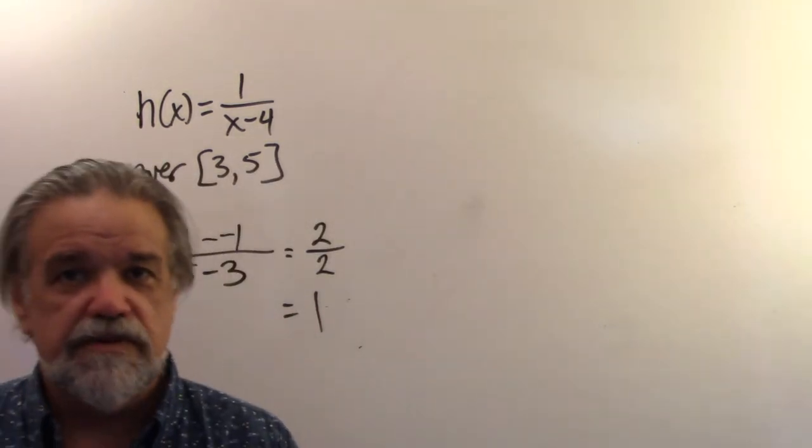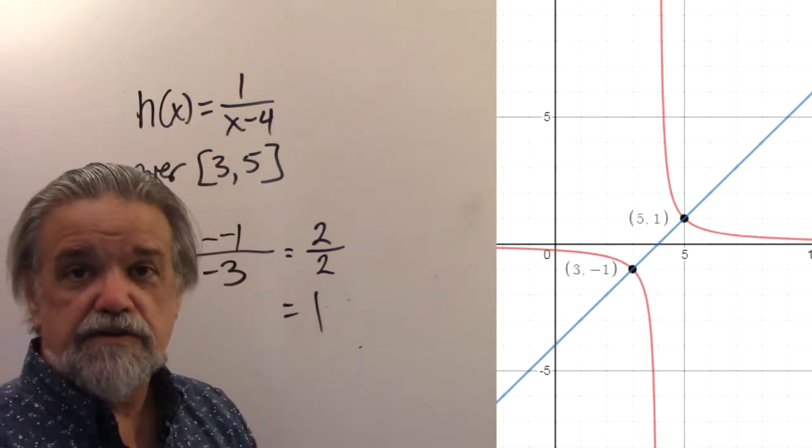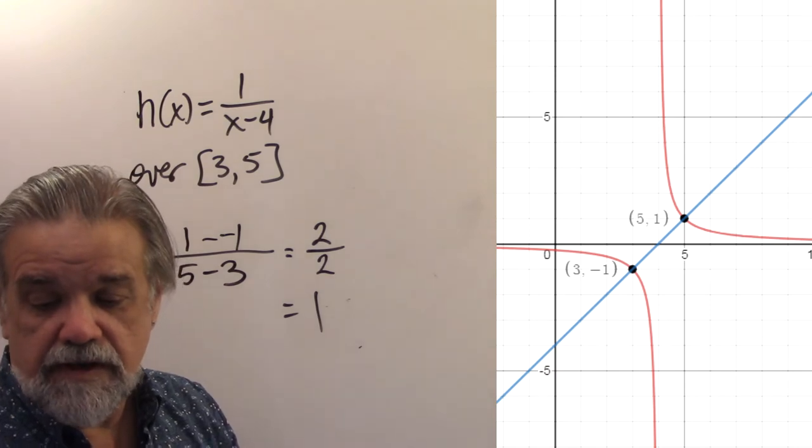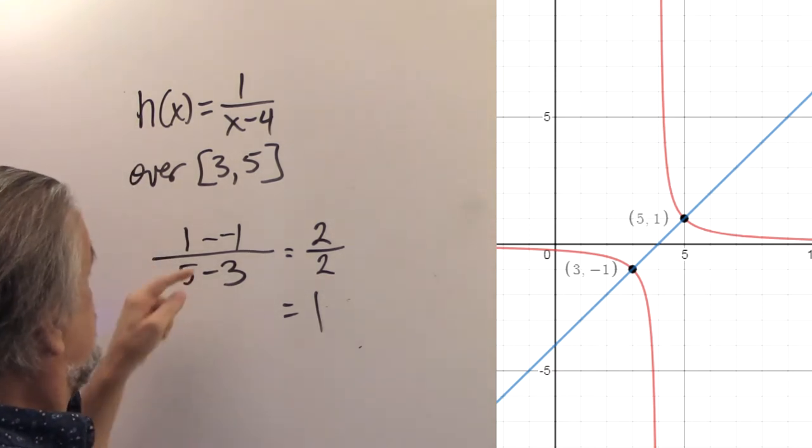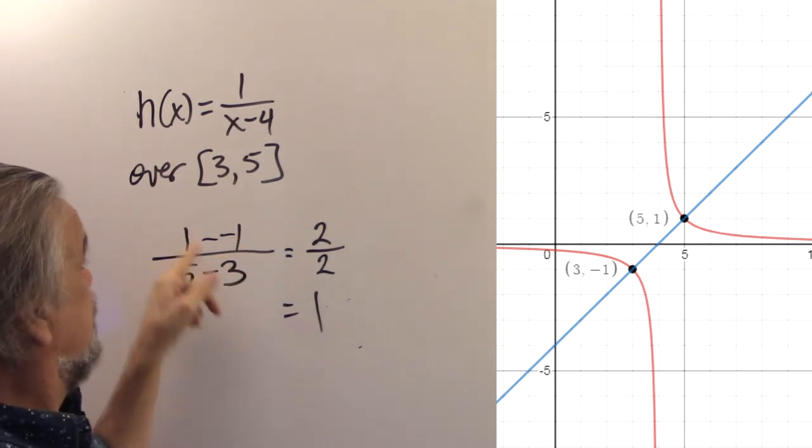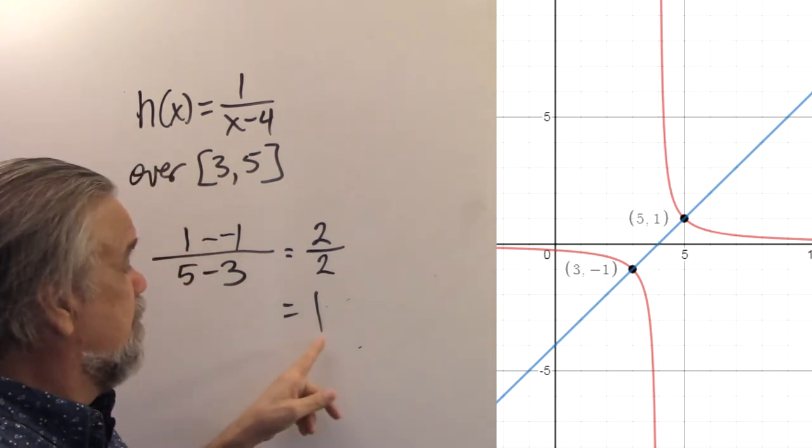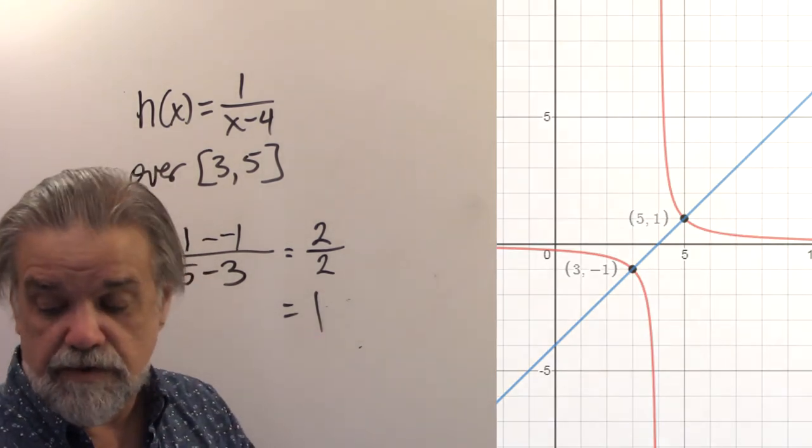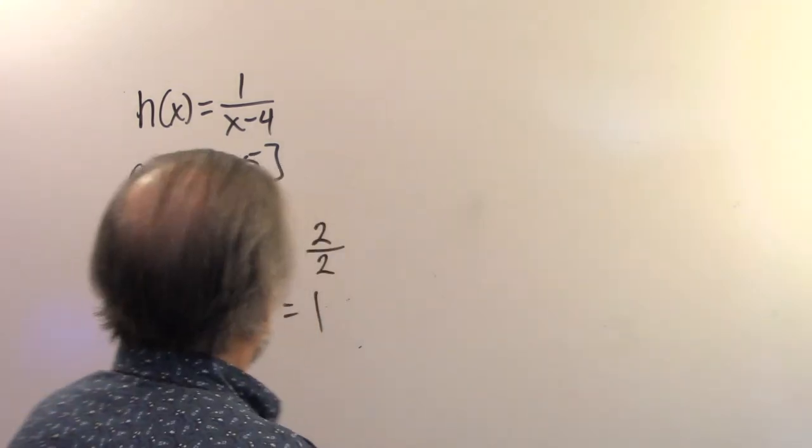And let's see what that graph looks like. And sure enough, we see our rational function there, going through the point (3, -1) and the point (5,1). And sure enough, it looks like it has a slope of 1. That's our average rate of change. Let's look at one more.